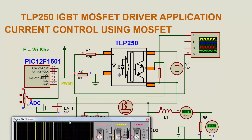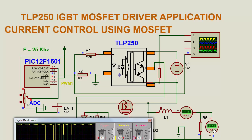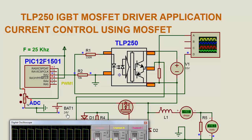The yellow color graph is the output of the TLP250. At this point, the ADC is at a higher position, so the current is at maximum and the voltage across the load is around 13 volts. We have used a 24 volt input to this MOSFET. When we decrease the ADC, the voltage and current will also decrease.